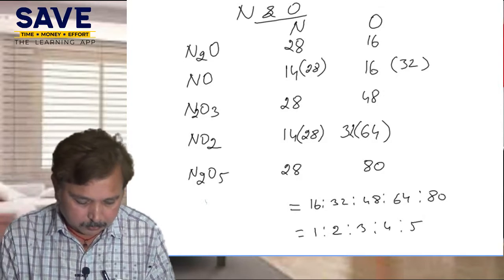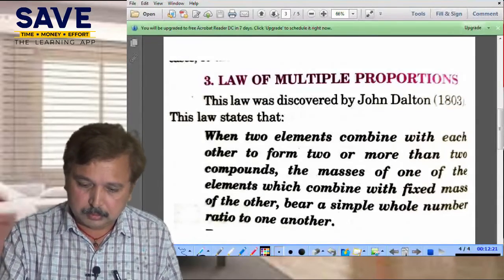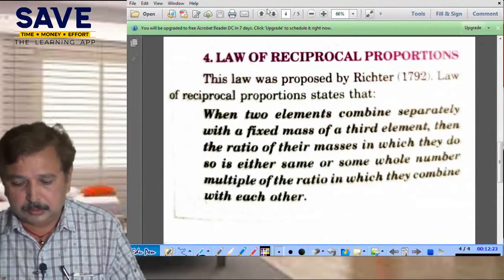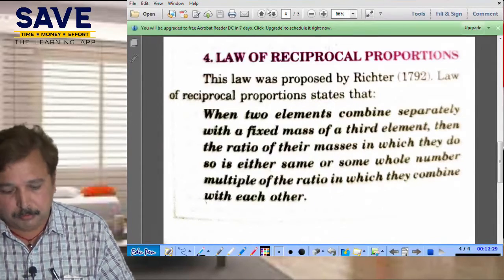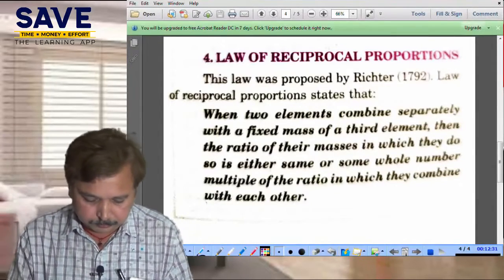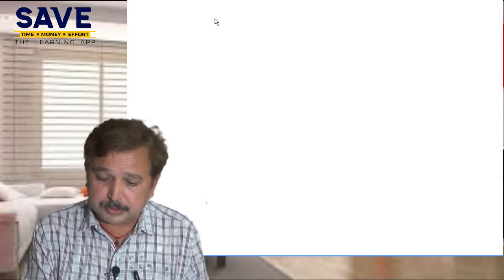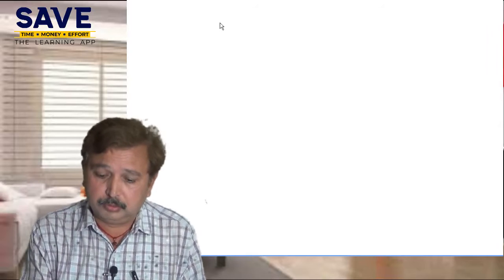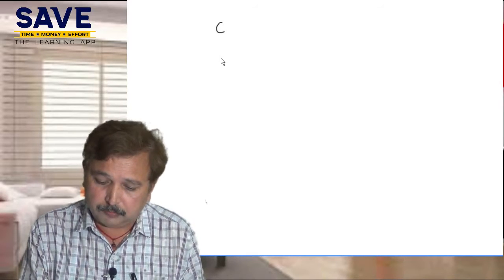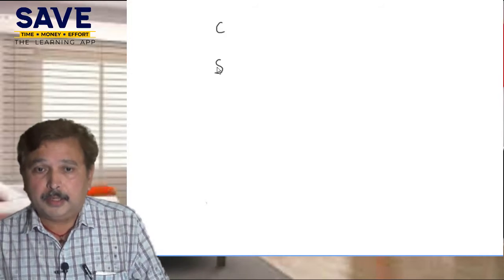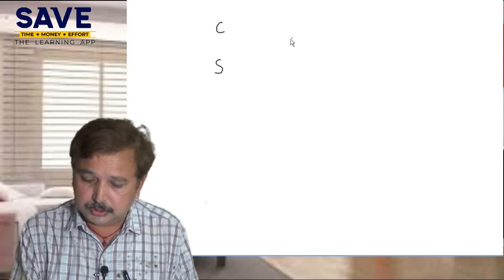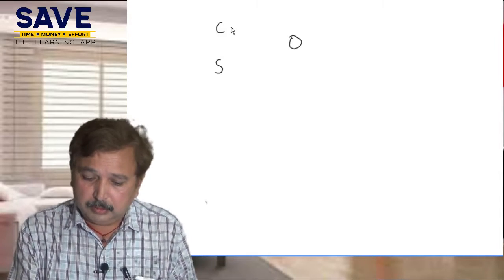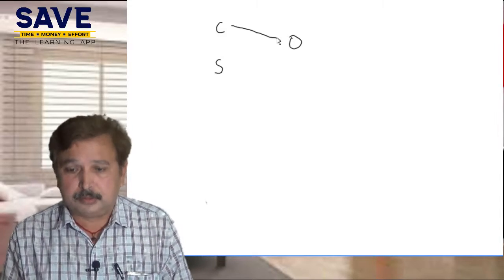Now the fourth law of chemical combination — the Law of Reciprocal Proportion. Suppose we have two different atoms, carbon and sulfur, and they each react with a third atom, oxygen.